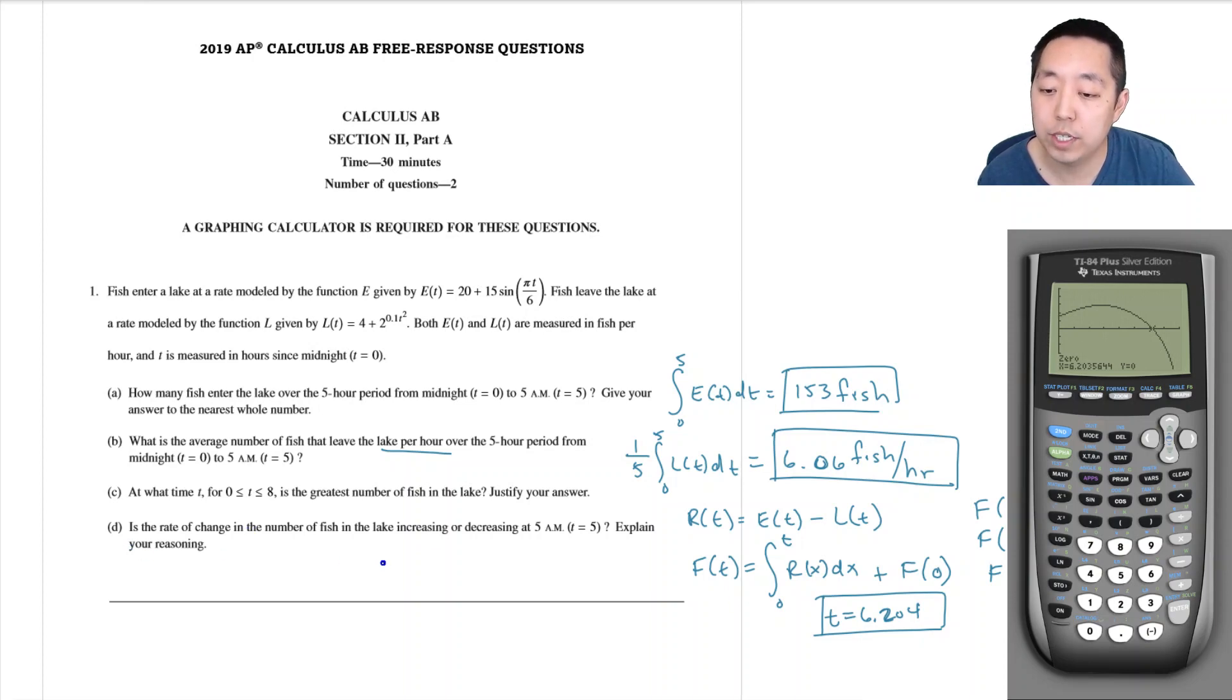All right, is the rate of change in the number of fish increasing or decreasing at time 5? And here's the rate of change. So they just want to know, is the rate of change in the number of fish increasing or decreasing? So what's increasing? r(t) is the rate of change in the number of fish. If I want to know if it's increasing or decreasing, I need to know what the derivative at 5 is.